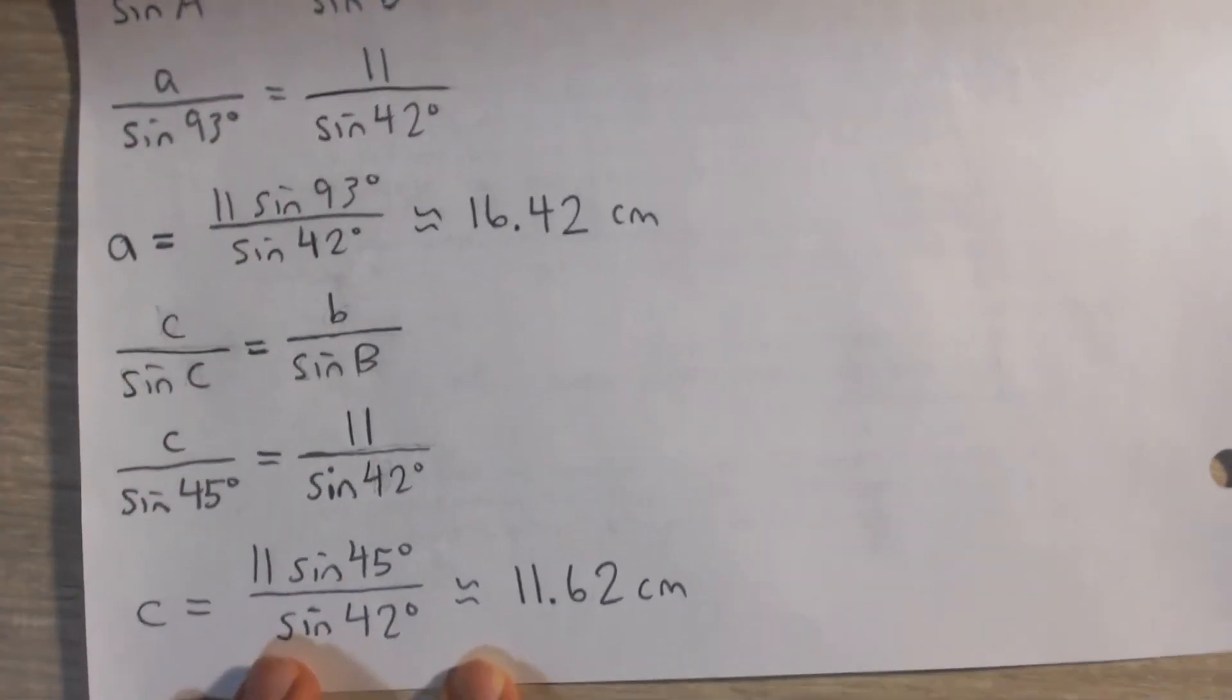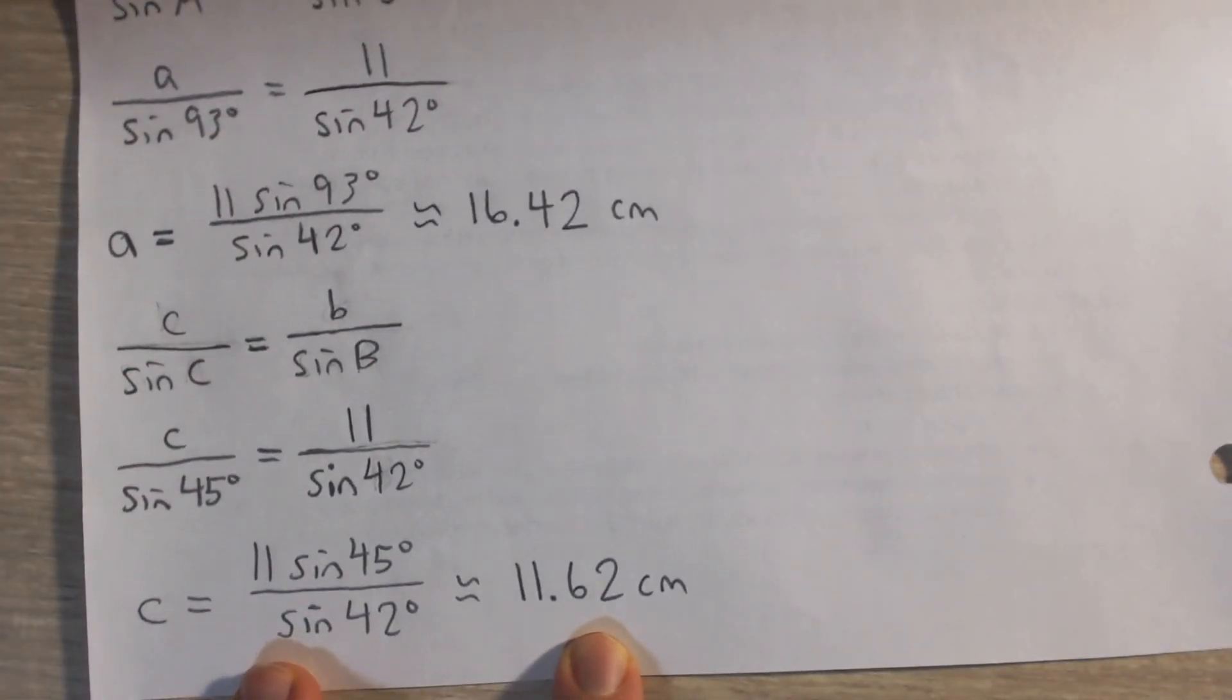We get 11 sin 45 divided by sin 42 degrees. And if you plug that into your calculator, you're going to get 11.62 centimeters.